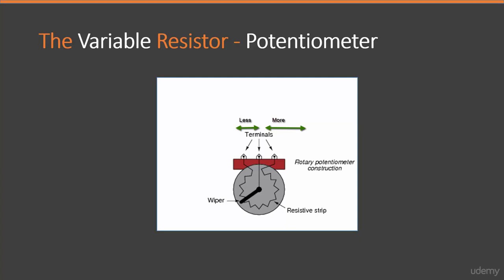If we connect such a variable resistor as an analog input to the Arduino, we can get different readings when the user manually changes it. In our case, we can use it to adjust the speed and brightness of the LED.